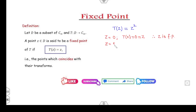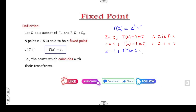Similarly, if Z = 1, then T(1) = 1, which is a fixed point. But if Z = −1, then T(−1) = (−1)² = +1, which is not equal to Z = −1. Therefore Z = −1 is not a fixed point. This is the first method — you can check by inspection.